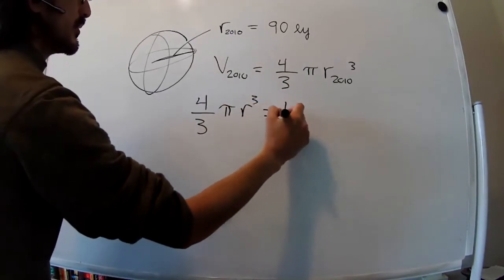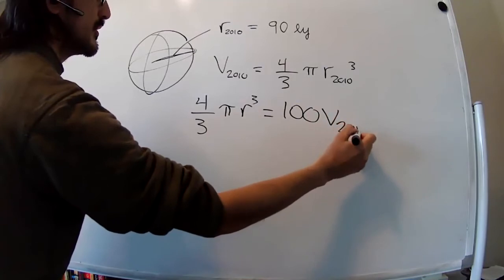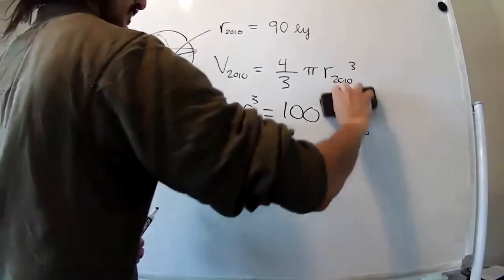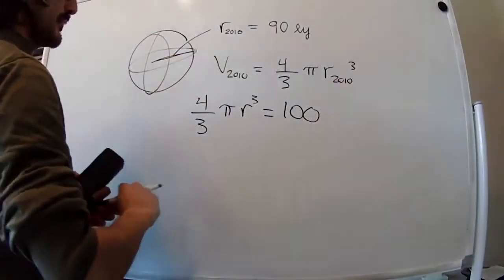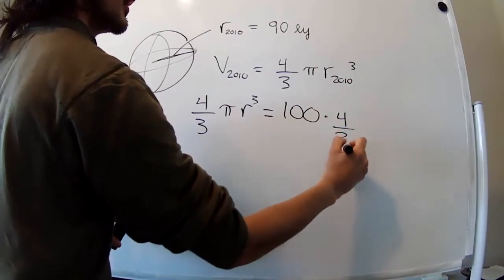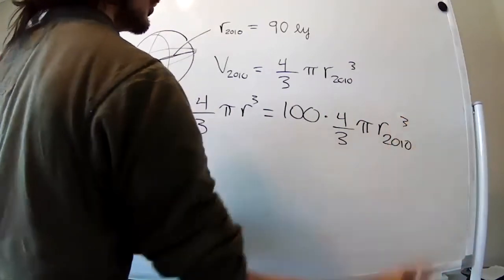And it's going to be equal to 100 times the volume in 2010. And it's going to be 100 times 4/3 π radius in 2010 cubed.